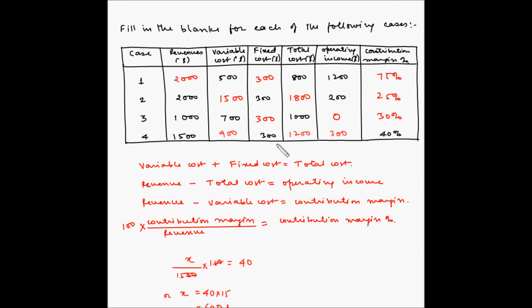We have now filled in all the blanks. This is how you can use the relationships between these terms to find out the various values. This type of analysis is particularly useful when you are analyzing a company's numbers with limited information — using the known relationships, you can find the remaining numbers and easily understand how the company is doing.